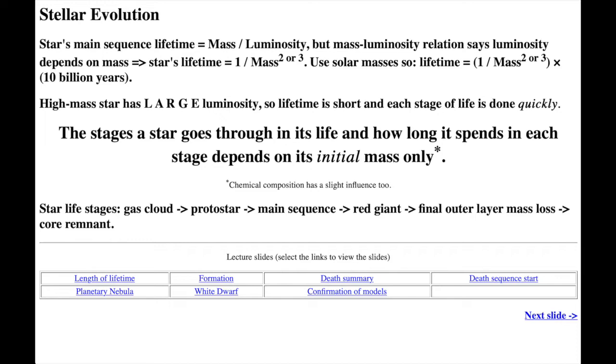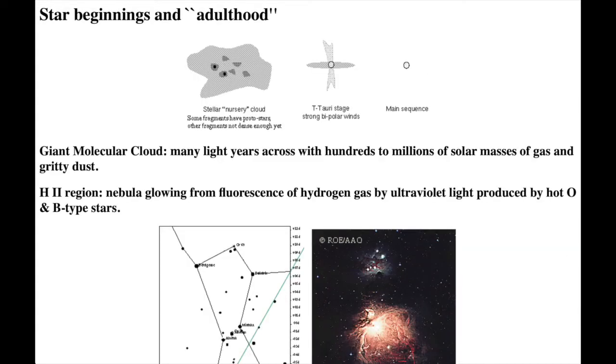The star life stages are analogous to our own life cycle. The gas cloud is like the womb. The protostar is the baby star. The main sequence stage is the healthy adult stage. The red giant is the elderly stage. The final outer layer mass loss is like our dying, and the core remnant is like the corpse.